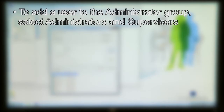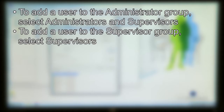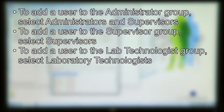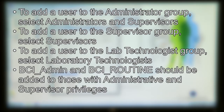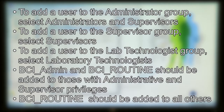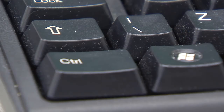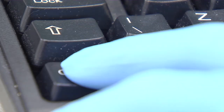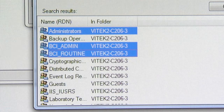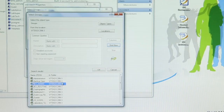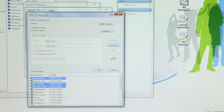To add a user to the Administrator group, select Administrators and Supervisors. To add a user to the Supervisor group, select Supervisors. To add a user to the Lab Technologists group, select Laboratory Technologist. BCI Admin and BCI Routine should be added to those with Administrative and Supervisor privileges; BCI Routine should be added to all others. To select more than one security group, hold down the Control key on the keyboard and click the desired groups. For our example, Microtech will be assigned to Administrator, Supervisor, BCI Admin, and BCI Routine.